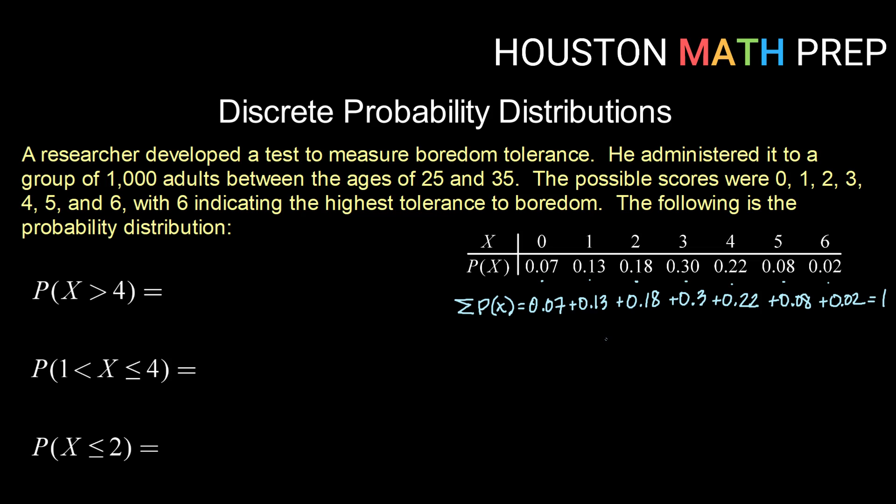Now that we know that, we can answer some questions about probabilities here. In our first question it says, what is the probability of getting a random variable X that is greater than 4?